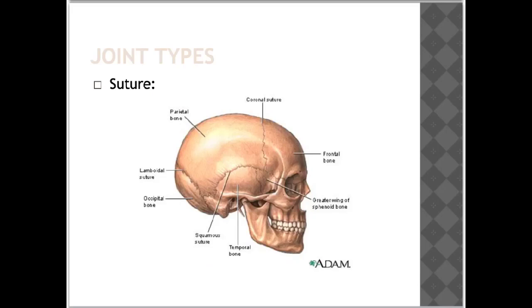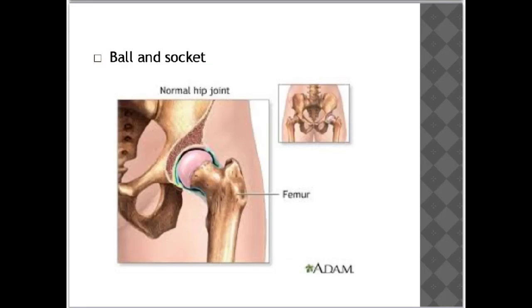The first joint is a suture joint. A suture joint is made up of strong connective tissue that joins two pieces of bone together — it doesn't allow movement, but it can allow growth. Suture joints are found on the skull and pelvis. You can see suture joints along the skull here, and the same types of joints are found on the pelvis.